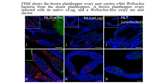After the transfer we screened a very large number of brown plant hoppers and eventually found a line carrying the new WSTRI Wolbachia strain. We then used FISH to look at the distribution of this Wolbachia in the tissue of the brown plant hopper. On the left hand side you can see the ovaries, and there is a high density of this Wolbachia present in the ovary tissues.